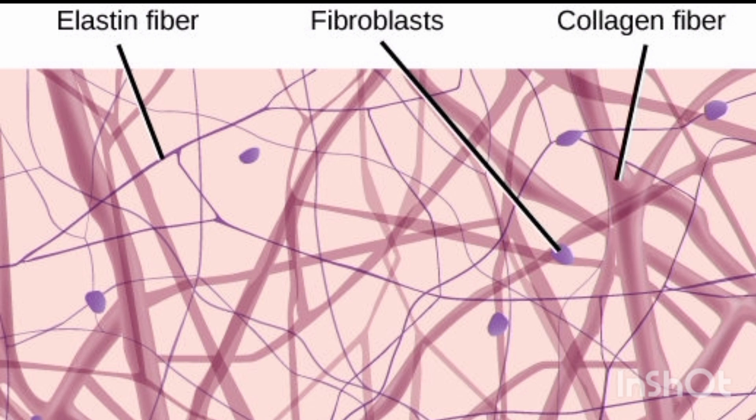Small blood vessels and capillaries run in the ground substance and supply the cells with oxygen and nutrients. Fibres are also found in the ground substance of the loose connective tissue.